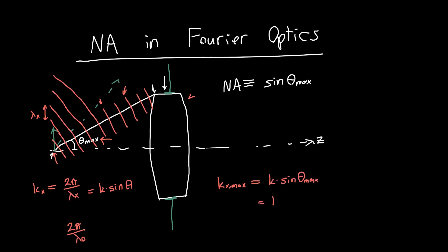So kx max is just k times sin θ max, or k times our numerical aperture. And so this aperture is effectively acting like a low-pass filter. I'm going to draw this in the convention of signals and systems here. So if this is our kx value, then this is our maximum value that we can transmit, and so this is the Fourier transform of our entrance pupil.